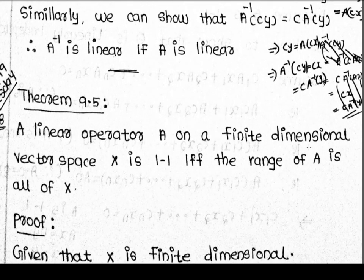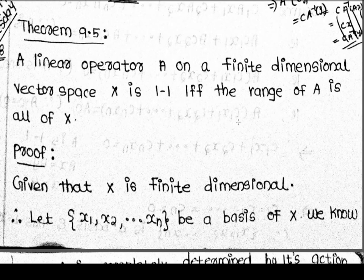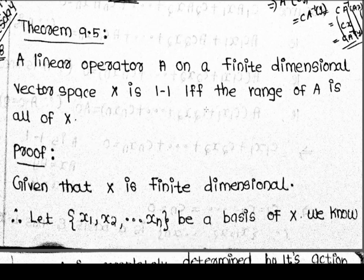Theorem 9.5: A linear operator A on a finite dimensional vector space X is one-to-one if and only if the range of A is all of X — that is, A is one-to-one if and only if A is onto.